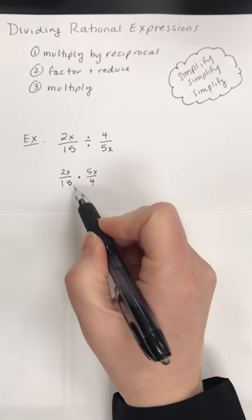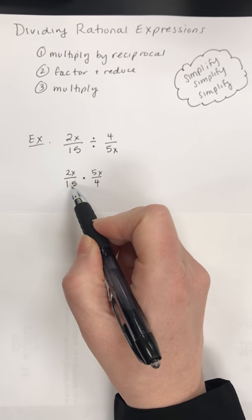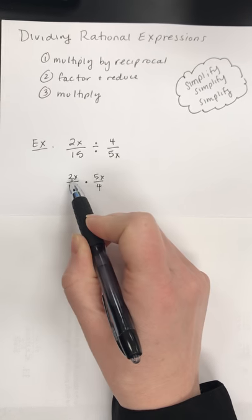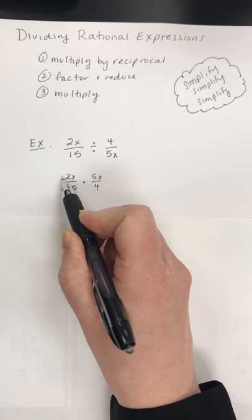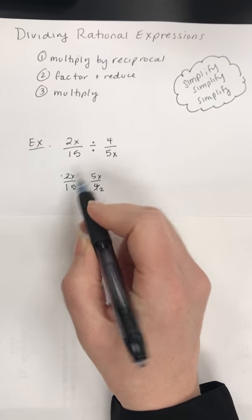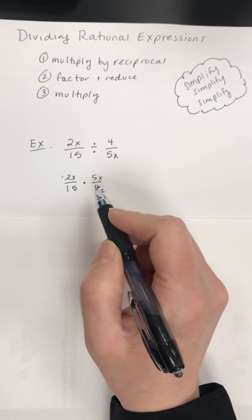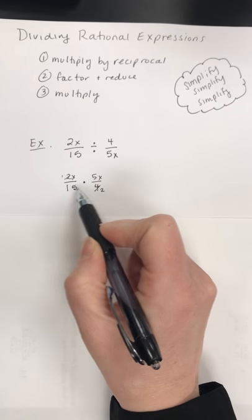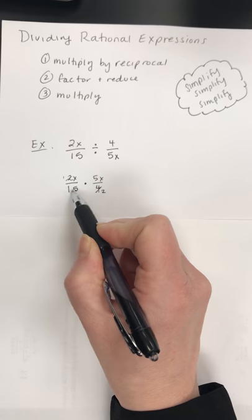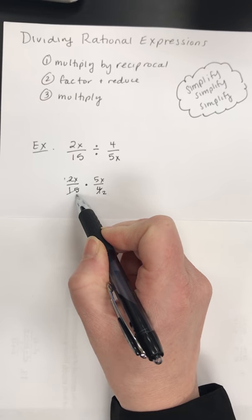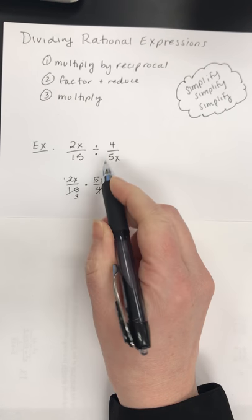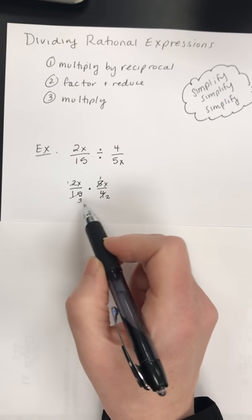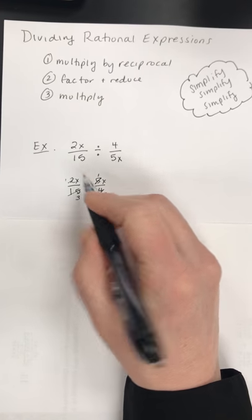So I see this fraction cannot reduce on its own, this fraction cannot reduce on its own, so I'm going to look on the diagonal numerator to denominator. So I see 2 and 4 factors, so I'm going to reduce the 2 to a 1 and the 4 to a 2. And I can't really do anything else on that diagonal. And I see here 15 and 5 are factors, so 15 divided by 5 is 3, 5 divided by 5 is 1.